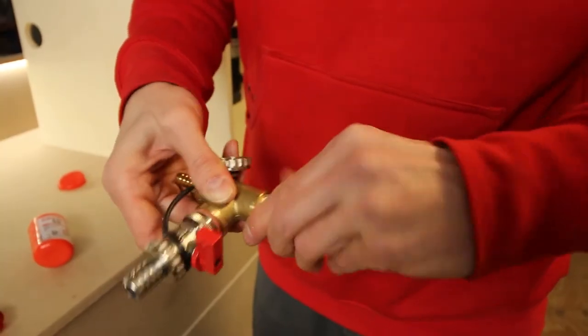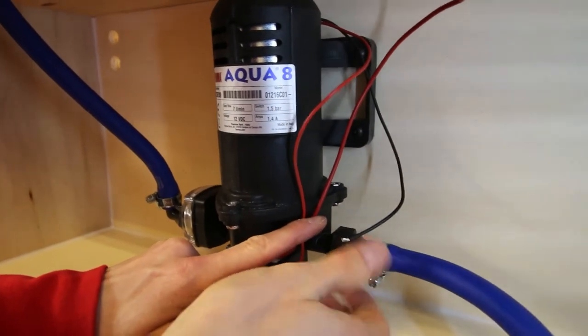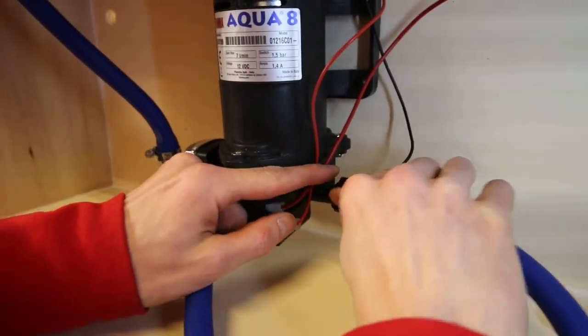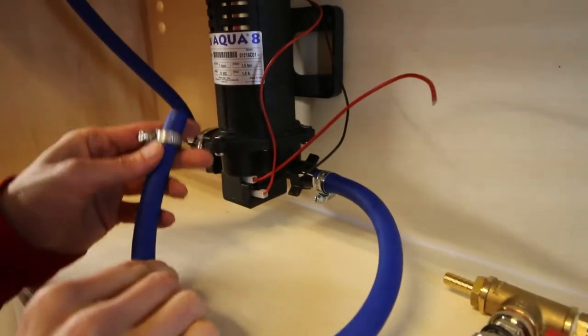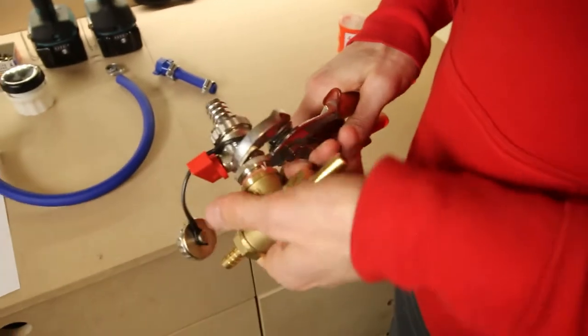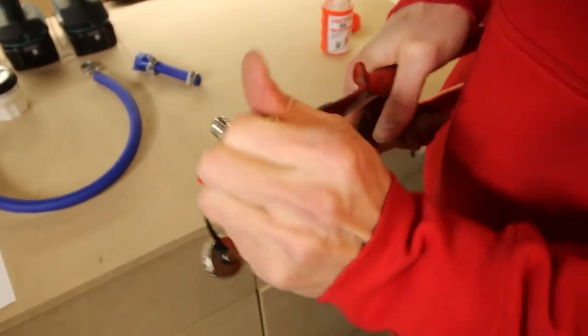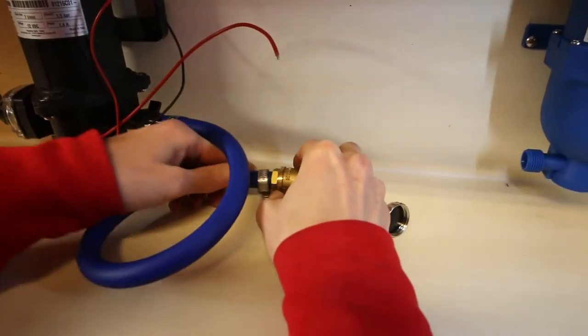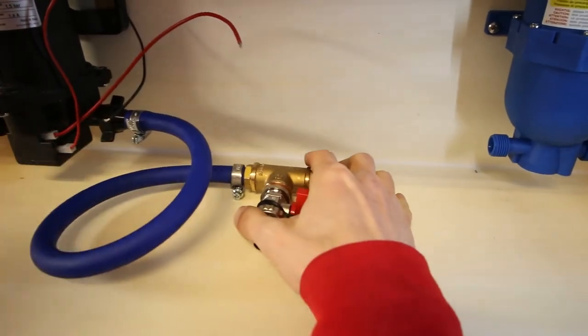The hoses between the water tank and the pump, as well as the pump and the expansion vessel, have a length of 0.5 meters following the pump installation manual. This length of the water hoses ensures that vibrations from the pump to the rest of the system are minimized.